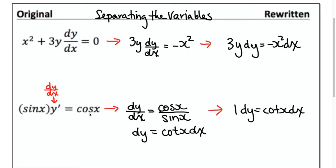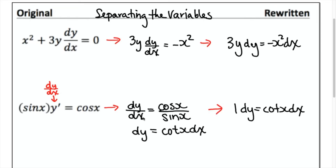Next example: sine x times y prime equals cos x. I rewrite y prime as dy/dx since I want dy's and dx's on each side. Dividing both sides by sine x gives dy/dx equals cos x over sine x. Bringing the dx over and simplifying cos x over sine x to cot x, I get dy equals cot x dx. Variables separated.